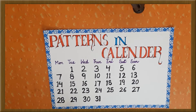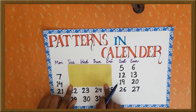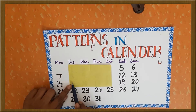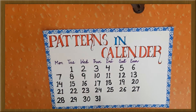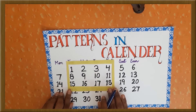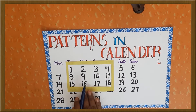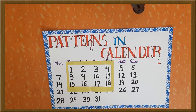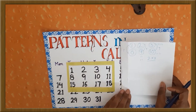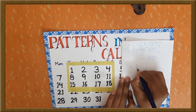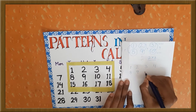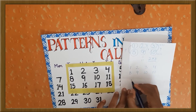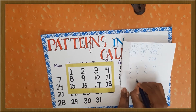Now let's talk about a bigger rectangle — the 3 by 4 matrix. We are going to see patterns in these numbers. We will take a sheet and make this 3 by 4 matrix.